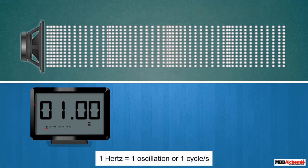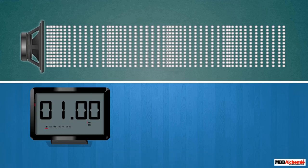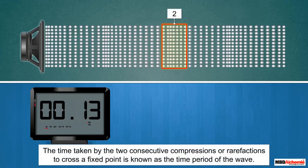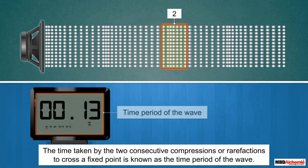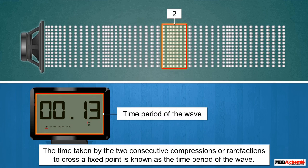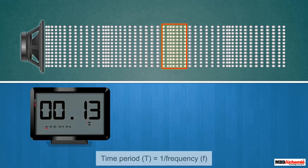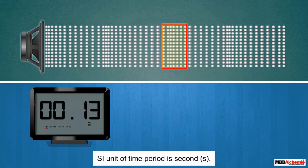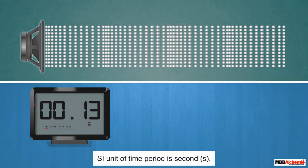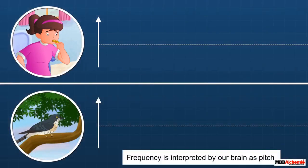One Hertz is defined as one oscillation or one cycle per second. Once we know the frequency, we can also determine the time taken for one complete oscillation in the medium — that is, the time taken by two consecutive compressions or rarefactions to cross a fixed point. This is known as the time period T of the wave, and is given as T equals one divided by frequency F. Its unit is seconds.